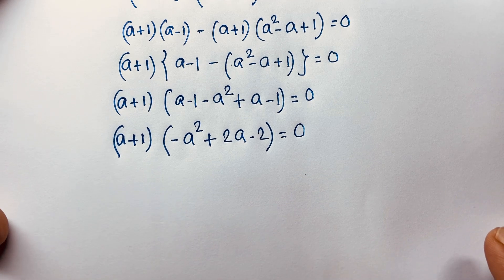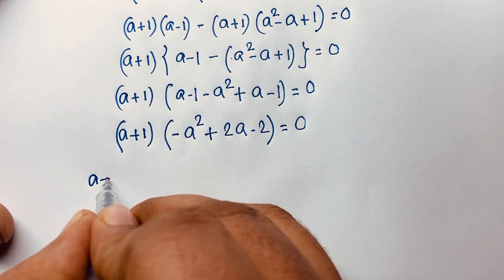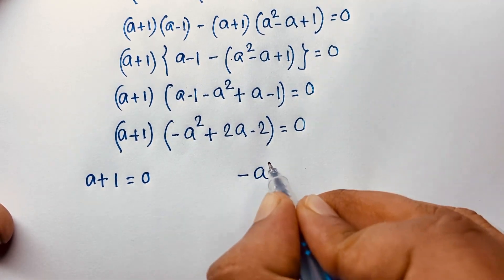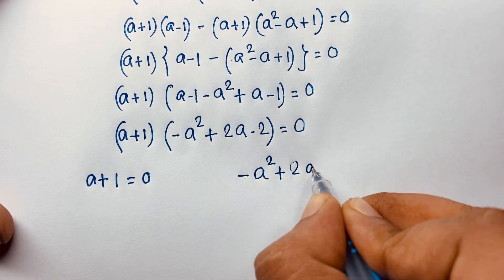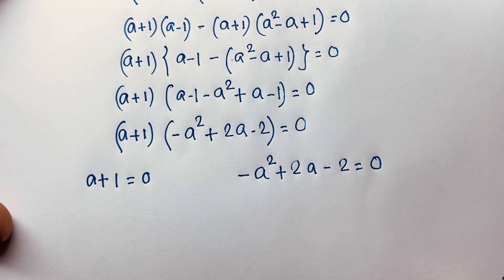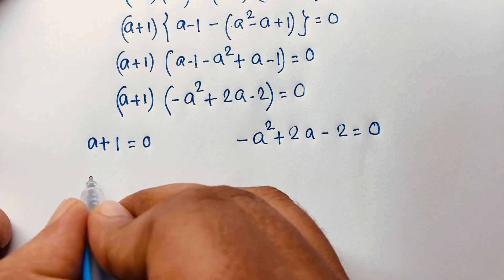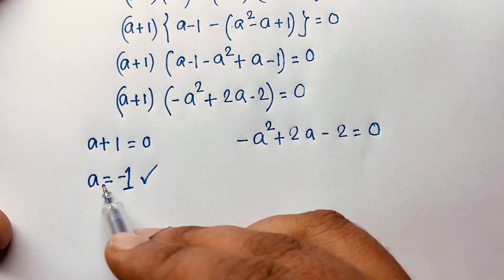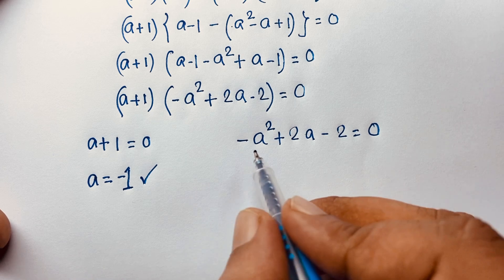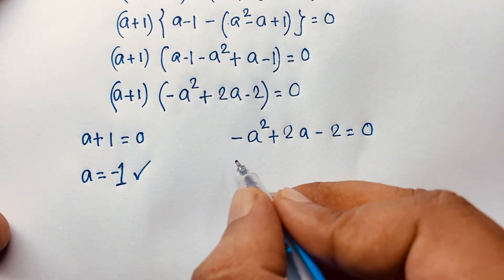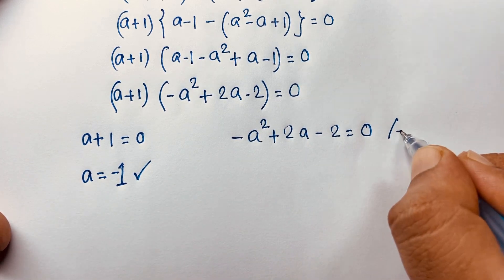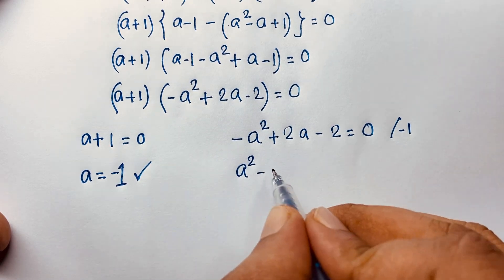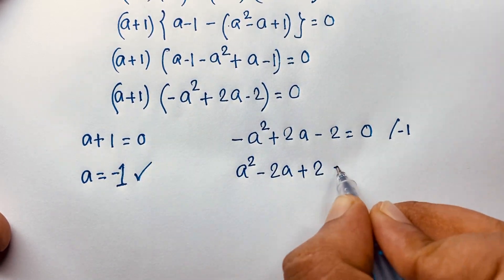We now have two cases. Case 1: a + 1 = 0, which gives a = negative 1. Case 2: minus a squared plus 2a minus 2 = 0. To simplify Case 2, I multiply both sides by negative 1, giving a squared minus 2a plus 2 = 0.